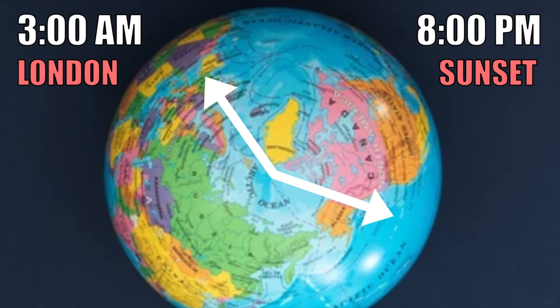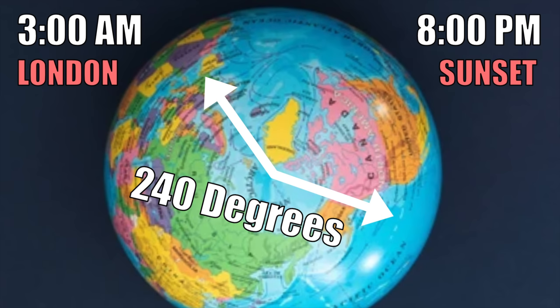The angle between these times correlates to your longitudinal position. You know you're at a latitude where the sun sets at about 8 p.m., and the angle between the two times is about 240 degrees. So you are currently 240 degrees away from London.